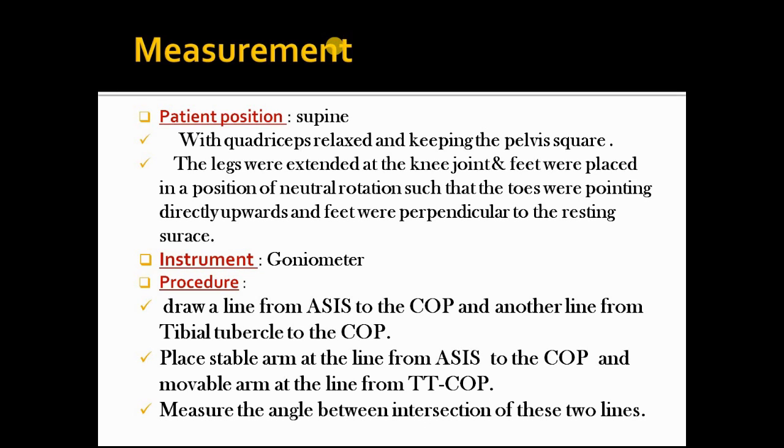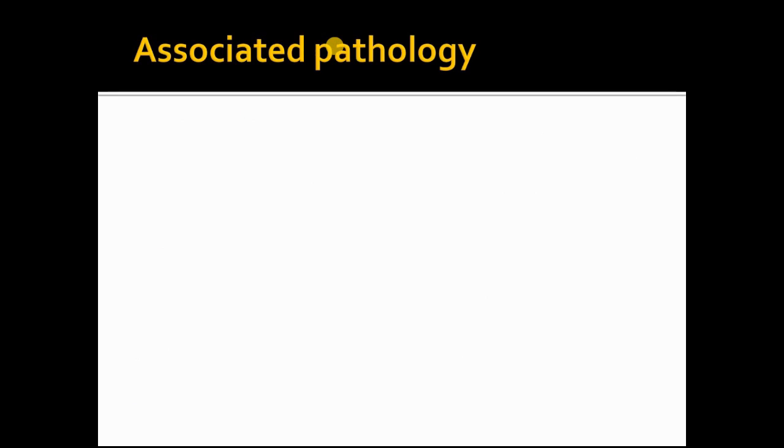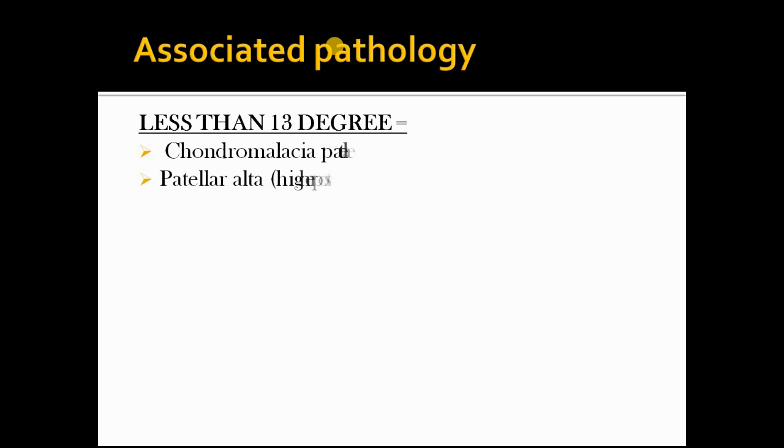I hope you understand the procedure. Now, after measuring the Q-angle, if it is less than 13 degrees, it is suggestive of chondromalacia patellae or patella alta, which is the higher position of the patella than normal.